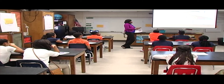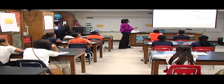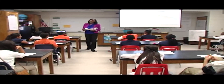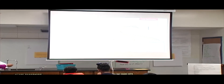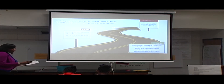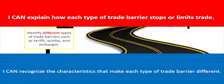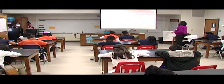Our final destination today will be related to the standard — being able to compare and contrast the different types of trade barriers. But before we can compare and contrast, we have to know what those trade barriers are. So today we're going to identify different types of trade barriers such as tariffs, quotas, and embargoes. By the end of class, you should be able to say: I can explain each type of trade barrier that stops or limits trade, and I can recognize the characteristics that make each type different. Take your highlighter and highlight our lesson focus at the top.